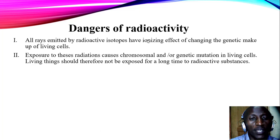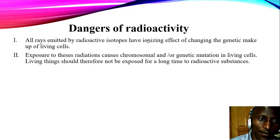However, we cannot end this without discussing on the dangers of radioactivity. Number one, all rays emitted by radioactive isotopes have an ionizing effect of changing the genetic makeup of living cells. So, it is very important that we are able to be careful about how we handle radioactive isotopes. Number two, exposure of these radiations causes chromosomal or what we call genetic mutations in living cells. Living beings should therefore not be exposed for a long time to radioactive substances.